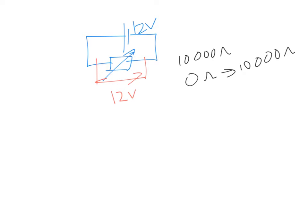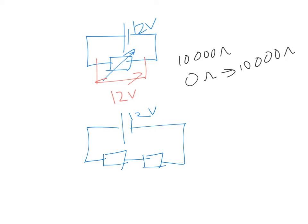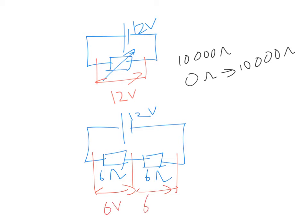So let's assume we take this cell with 12 volts and we connect to two resistors. Let's say this is 6 ohm and 6 ohm. So how will the voltage be divided? The voltage will be divided half-half, so each one will also take 6 volts and 6 volts.